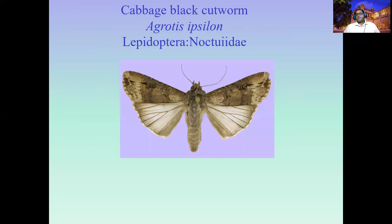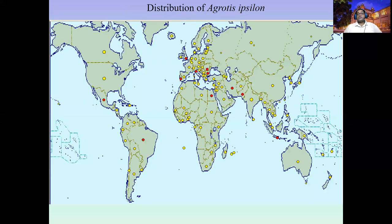Another pest of cabbage is Agrotis ipsilon, belonging to Lepidoptera, family Noctuidae. We call it the cabbage black cutworm. It is a foliophagous pest that can attack more than 200 species of crops other than crucifers, especially potato. In Sri Lanka, it is in the yellow pest surveillance category.